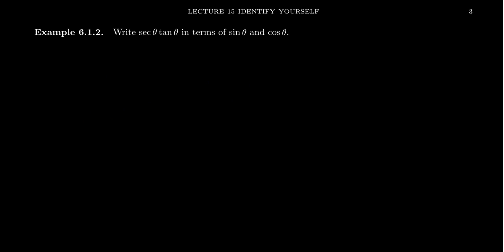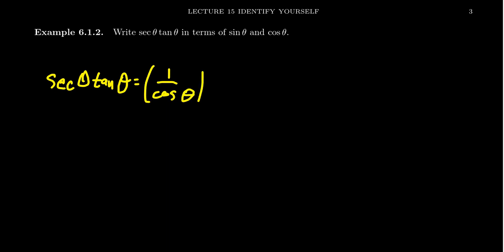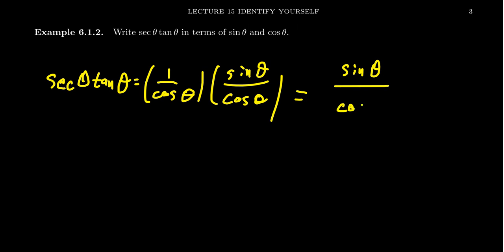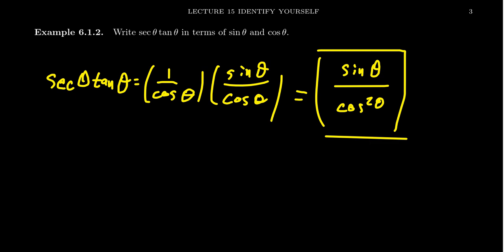Every trigonometric function can be written using just sines and cosines. For sec θ · tan θ in sines and cosines: sec θ = 1/cos θ (reciprocal identity), and tan θ = sin θ/cos θ (ratio identity). Multiplying gives sin θ / cos² θ. So sin θ / cos² θ is the same as sec θ · tan θ. This is the tradeoff — if you don't want a fraction, you might need all the trig functions, but if you only want sines and cosines, you might have to use a fraction.